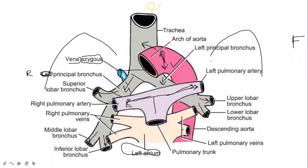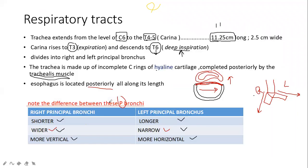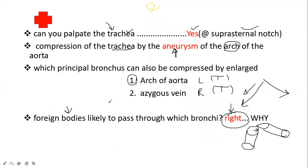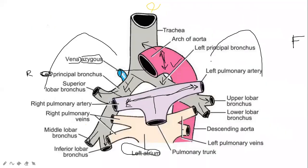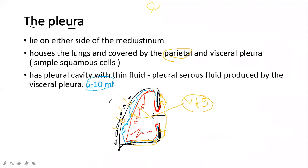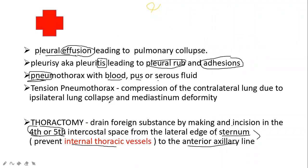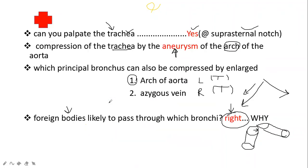That covers today's content: the respiratory tract, differences between left and right principal bronchi and their relations, the pleura with its nerve supply, and the clinical conditions. Tomorrow we'll discuss the lungs in detail as well as an introduction to the heart and breathing mechanisms.